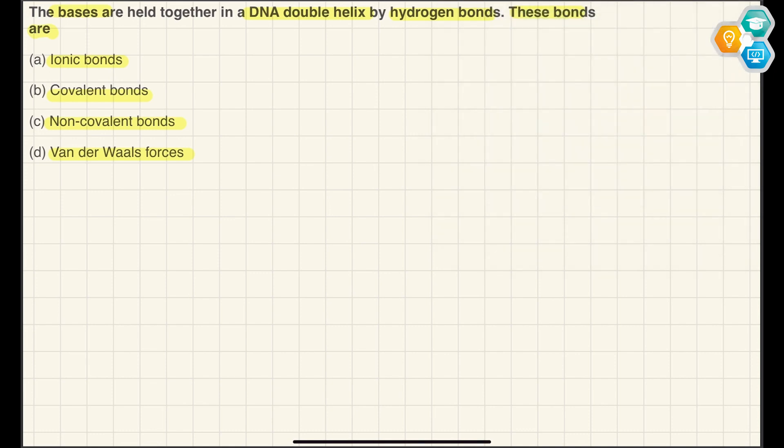So we have hydrogen bonds. Basically, nitrogen bases form hydrogen bonds - A equals T and G equals C. These are non-covalent bonds. If we talk about DNA in general, non-covalent bonds are important.